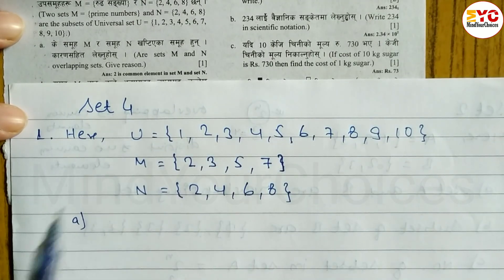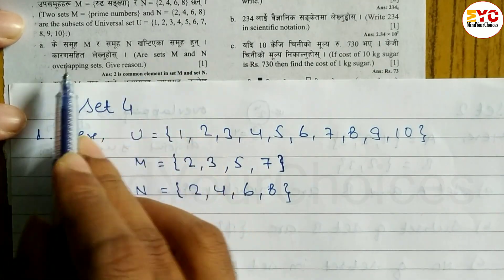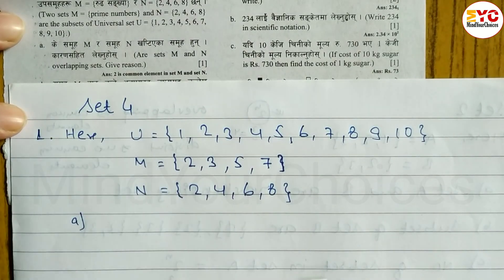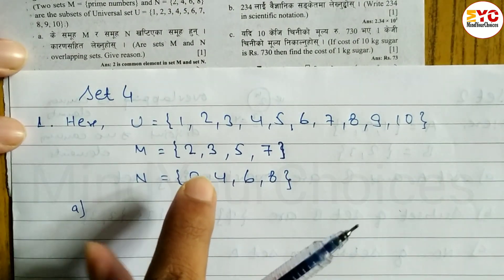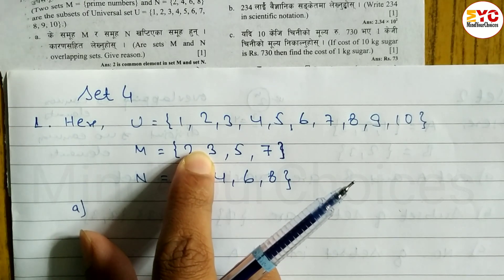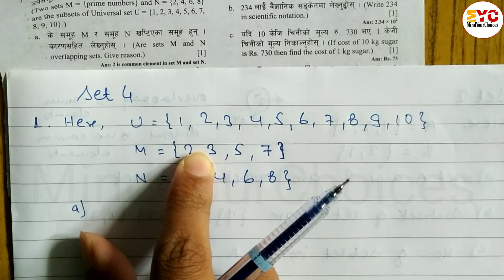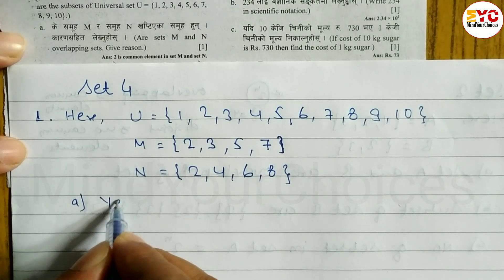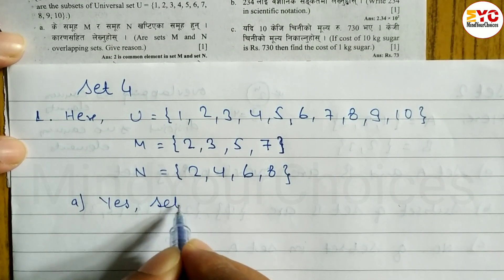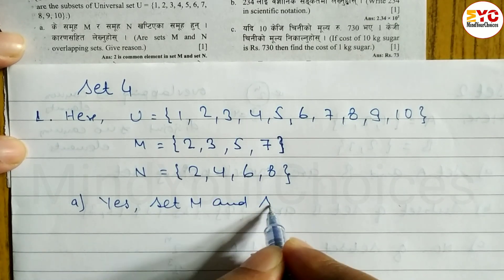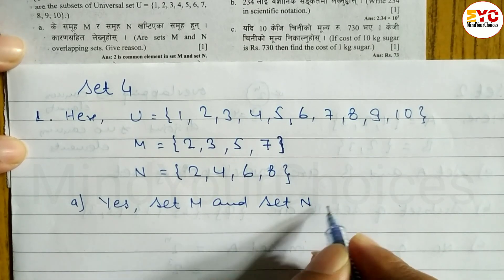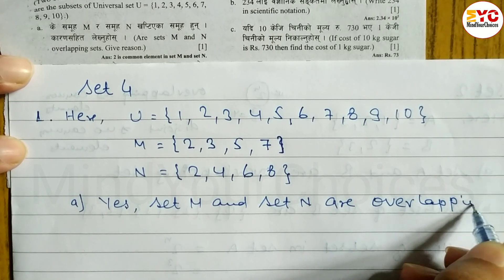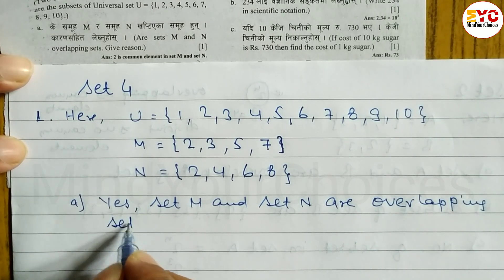Question (a): Are set M and set N overlapping sets? Yes — M and N are overlapping sets. We need to give the reason as well. The reason we say they are overlapping: set M and set N are overlapping sets because...